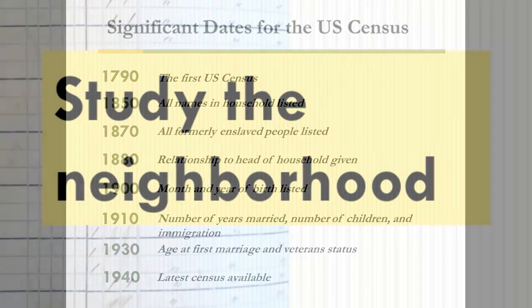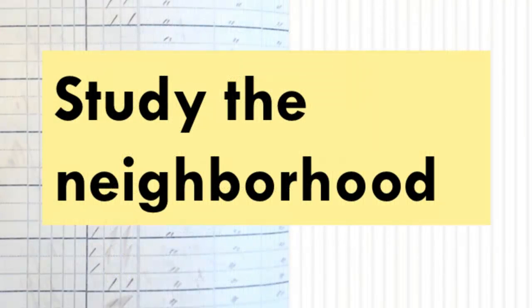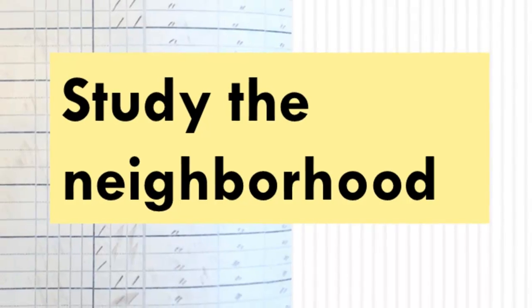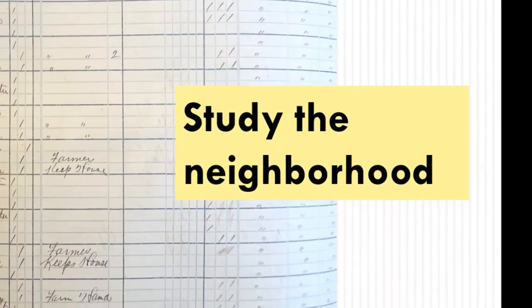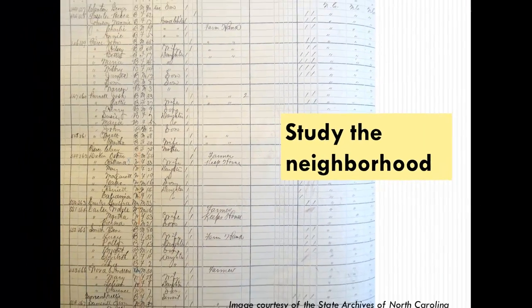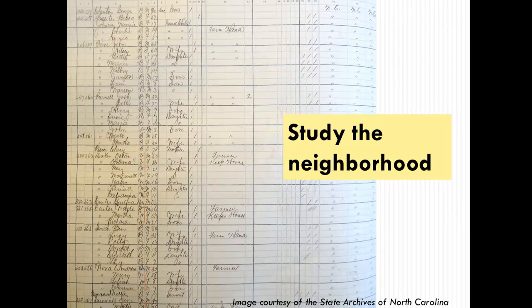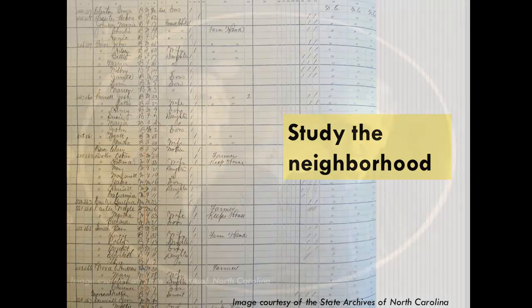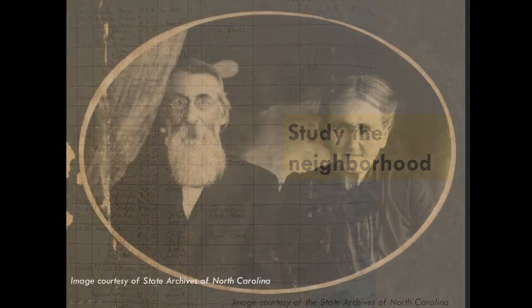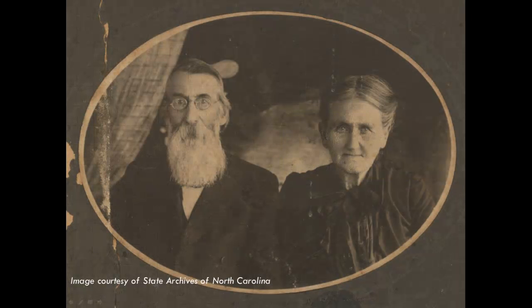Not only can you find information about your ancestor, but you might also be able to find out about other family members and future spouses by examining the roughly 12 families that appear before and after your ancestor's family. People didn't move far from their community and generally married someone who lived nearby. So if you have hit a brick wall in your research, carefully examine everyone in the neighborhood in which your ancestor lived.